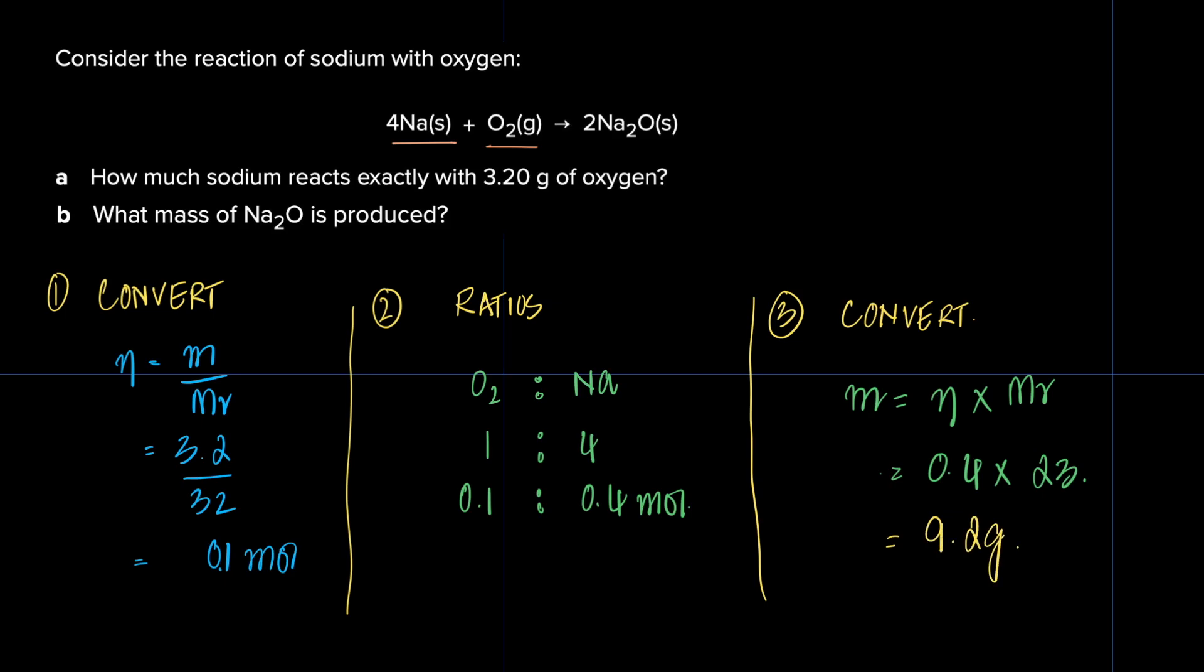Part B of the question is asking, what is the mass of Na2O that is produced? So what is the mass of this produced? So we've done most of the work. We figured out the moles of this thing. So can we figure out the moles of Na2O? Just applying ratios because we already know the moles of oxygen because we're comparing it to the oxygen and sodium oxide. Then we can figure out the mass of that sodium oxide because they're asking for the mass.